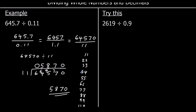This is the answer to 64,570 divided by 11. But that is the same answer as 645.7 divided by 0.11 — they're equivalent, they're the same thing. So 5,870 is the final answer.